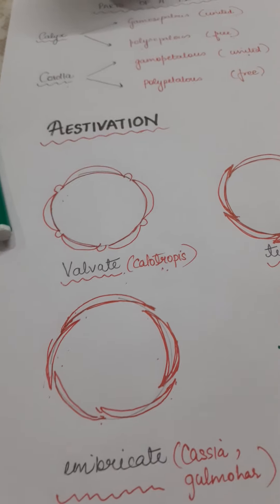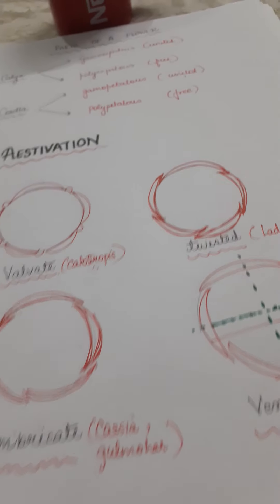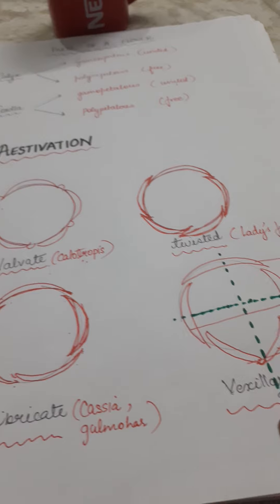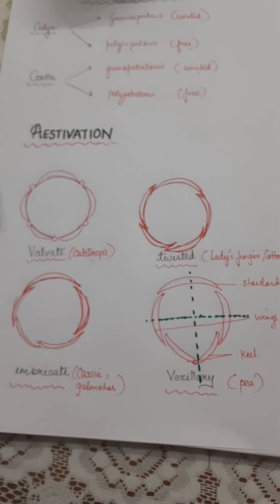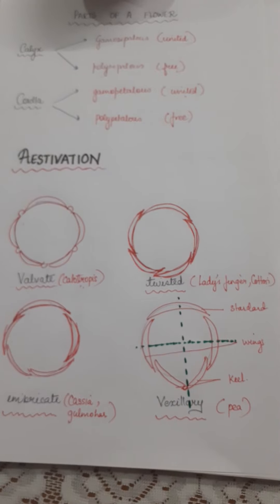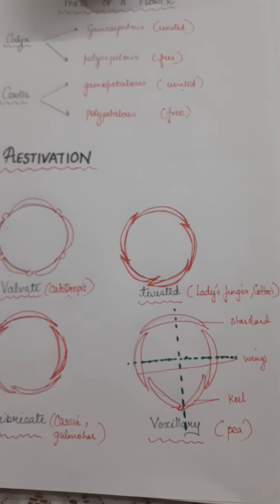So you have four kinds of aestivation in your syllabus. Valvate aestivation, twisted aestivation, imbricate aestivation and vexillary or which is often known as papilionaceous. The examples are as equally important as the diagram or the way you draw.